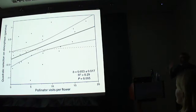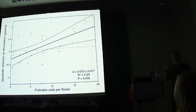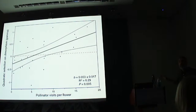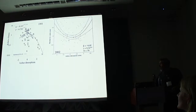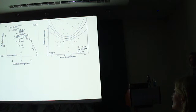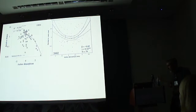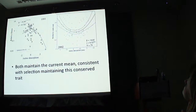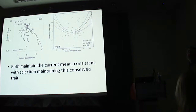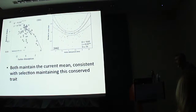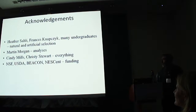We don't yet understand how to explain this. The other hypotheses for the adaptive value of four long and two short stamens don't involve pollinator visitation rates at all, as far as I know, so I appreciate your ideas on this. To summarize the overall pattern: the two years with strong evidence for selection are exactly opposite in direction. But importantly, both stabilizing and disruptive selection will maintain the current mean, consistent with selection maintaining this conserved trait. And we have no good evidence for developmental constraints on this quantitative trait either.